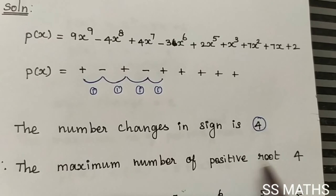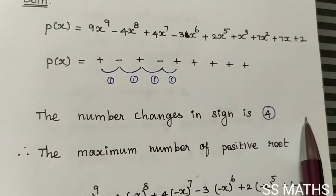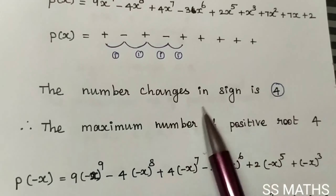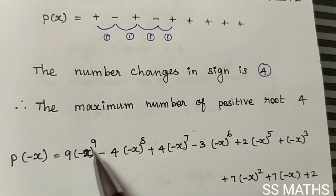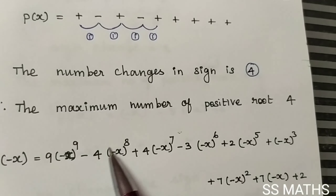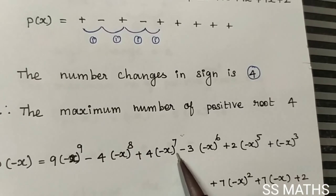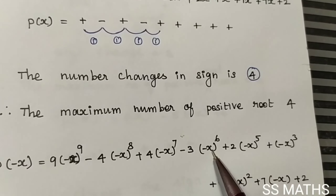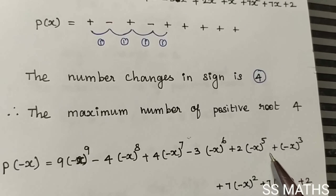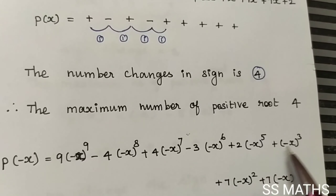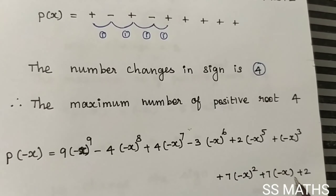Now we find f(−x) equal to 9(−x)⁹ − 4(−x)⁸ + 4(−x)⁷ − 3(−x)⁶ + 2(−x)⁵ + (−x)³ + 7(−x)² + 7(−x) + 2.